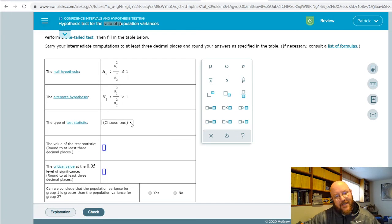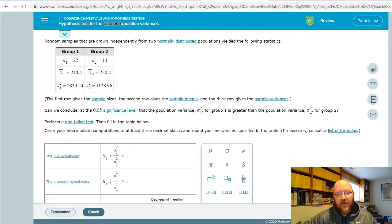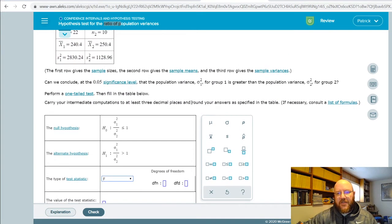Type of test statistic for these is always F because we're testing variances and that's what we use the F distribution for.